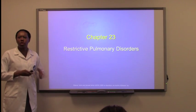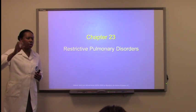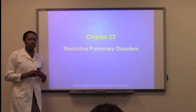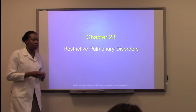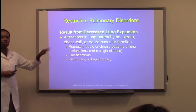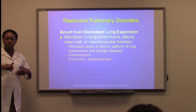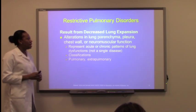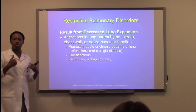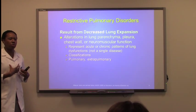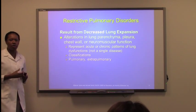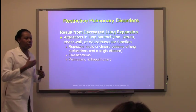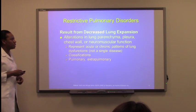Chapter 22 went over obstructive pulmonary diseases — anything that's obstructing the airway. This chapter covers restrictive pulmonary diseases, which involve any type of alteration that happens to the outside of the respiratory area or the pleural cavity, chest wall, and anything that's extrapulmonary as well. Most of these diseases involve the parenchyma of the lung, or the area of the alveoli, so there will be damage to the alveoli.